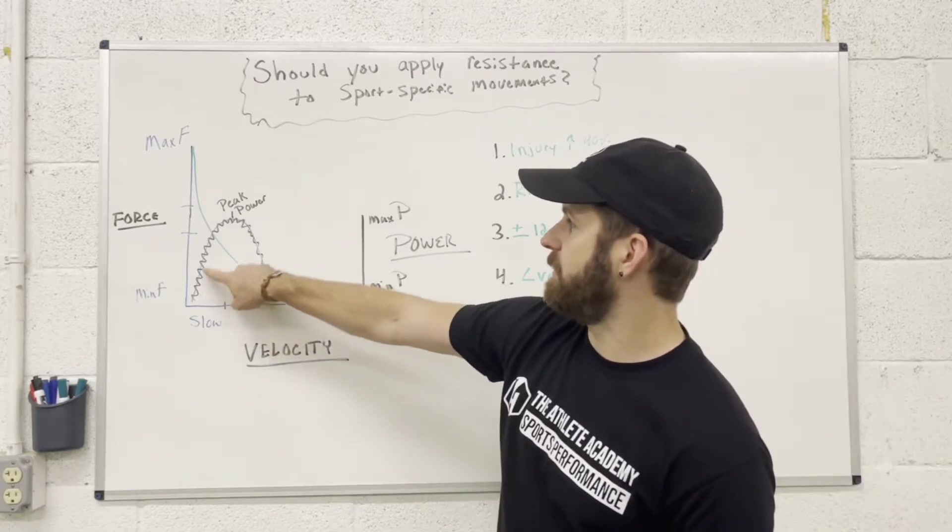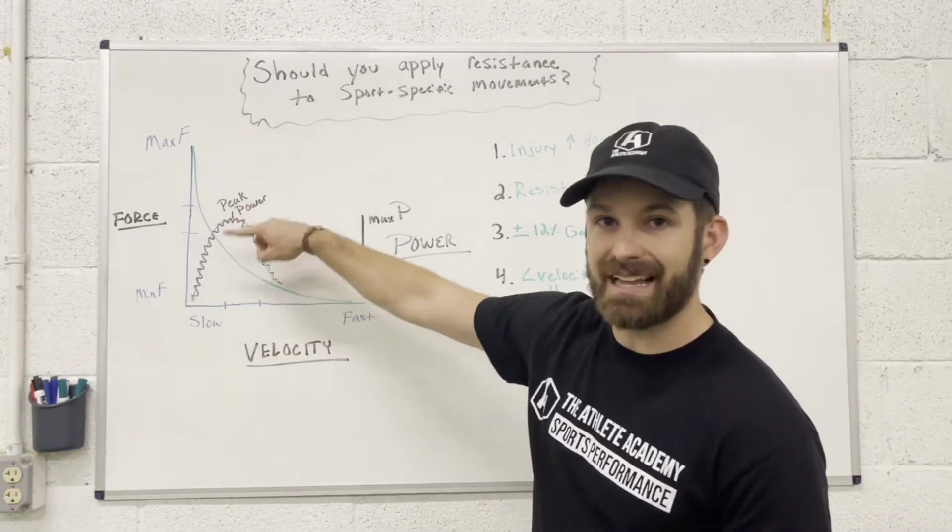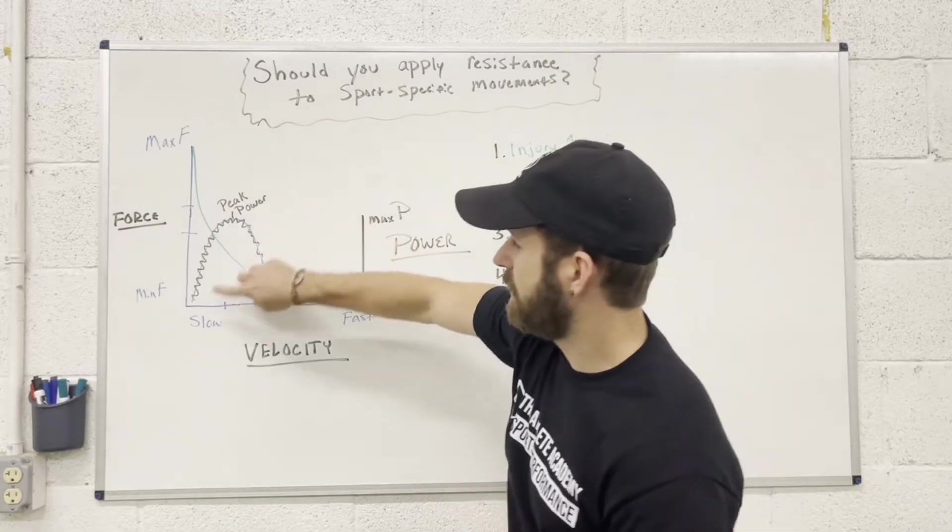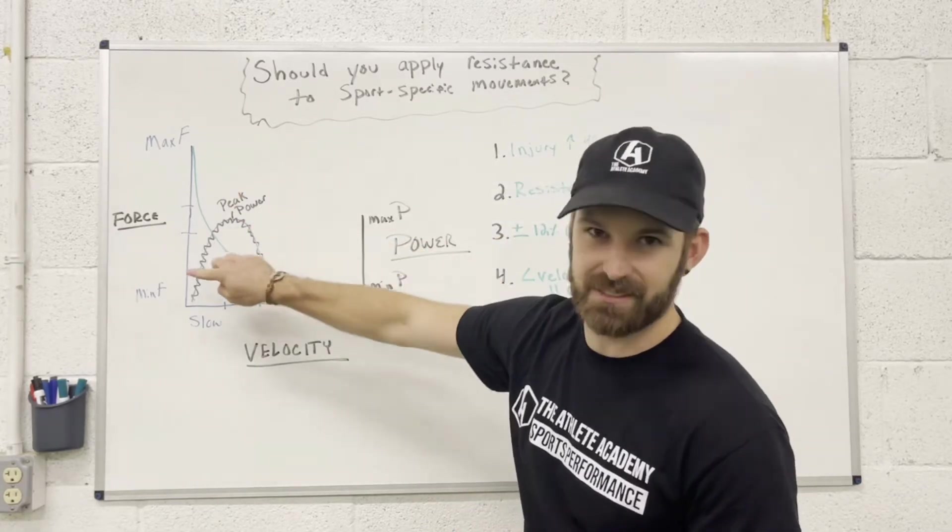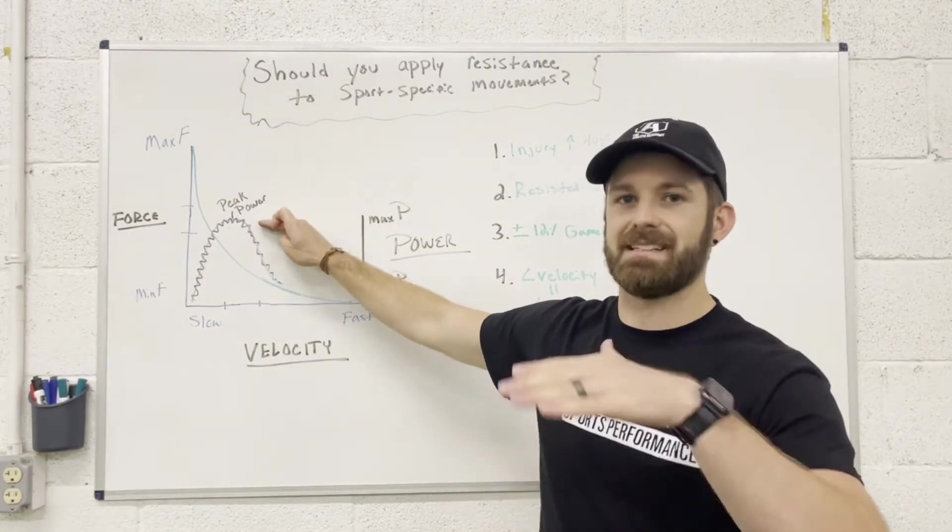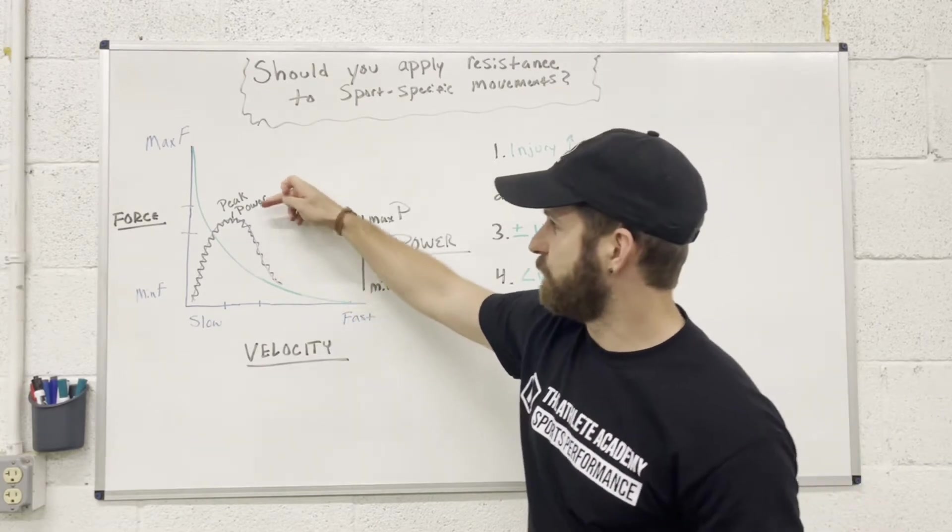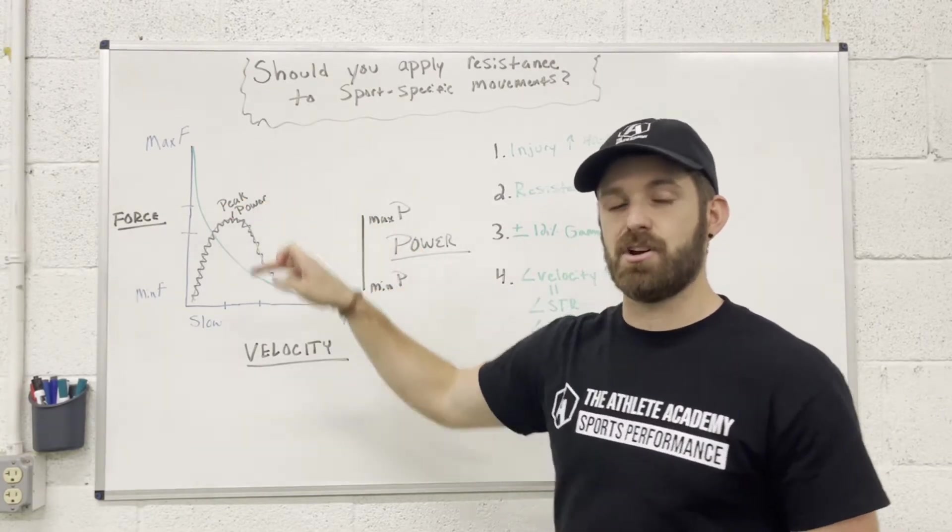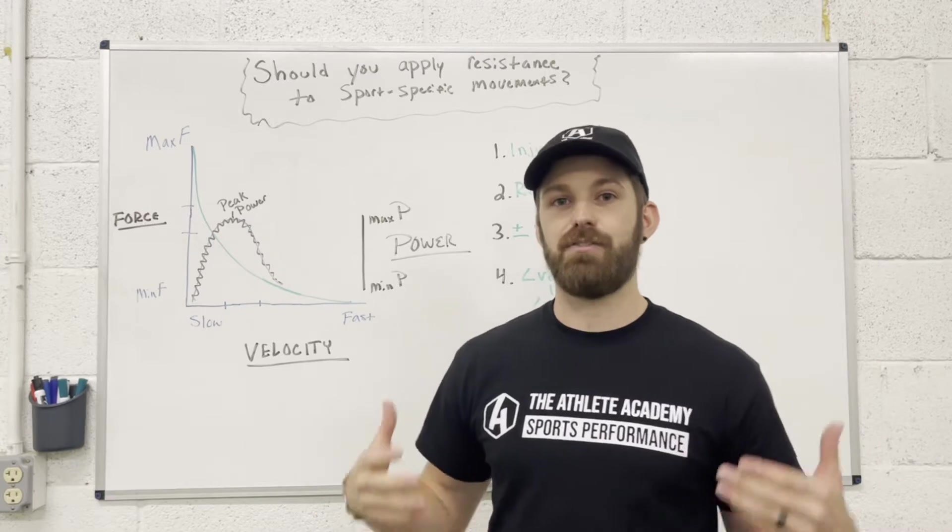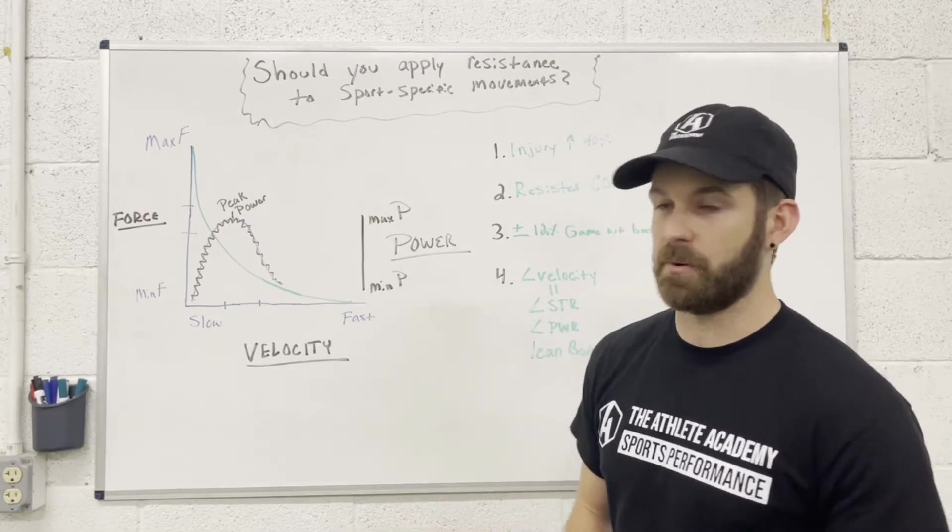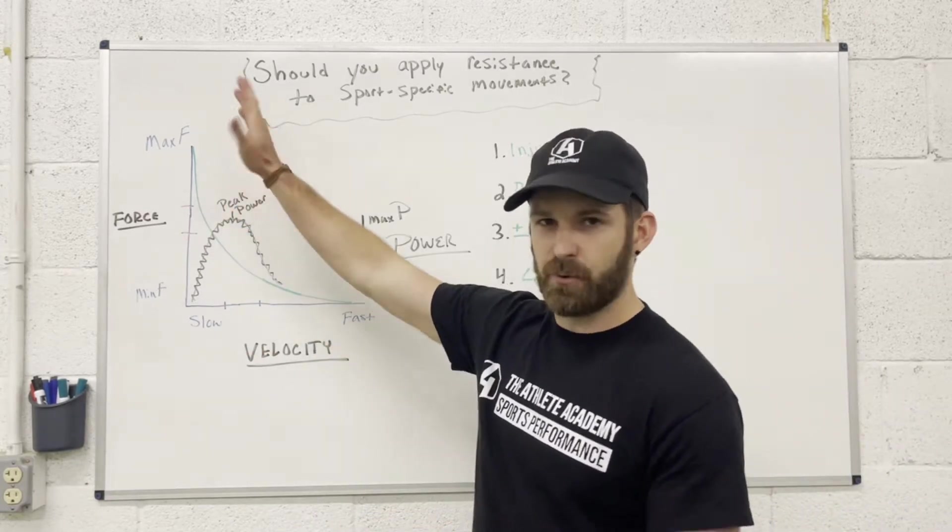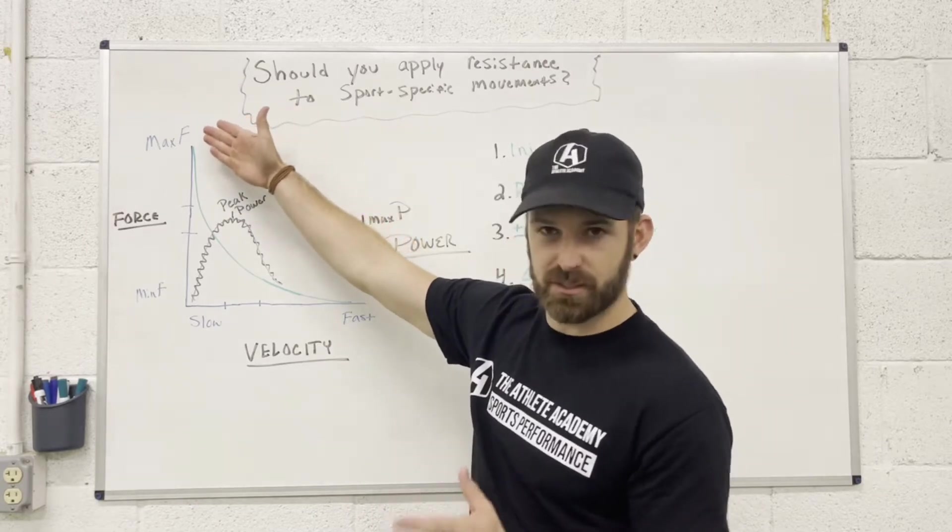So peak power is this black squiggly line here and the peak's gonna be at the top. Power is gonna be the whole black squiggly line, but the peak power is gonna be at the top. That's what we're chasing. If we're training athletes in that peak power zone, we're creating a more powerful athlete which is gonna improve on the field performance. Before we dive into that a little bit more, let's look at the graph a little bit.